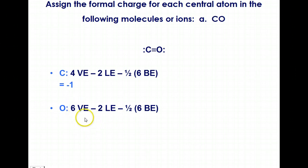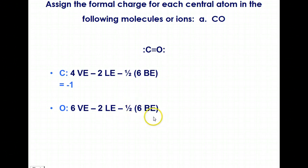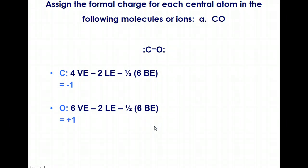Oxygen should be plus one so it cancels out the minus one for carbon. Oxygen has six valence electrons; two are lone electrons assigned to oxygen. Again, we have three bonds, so six bonding electrons being shared between oxygen and carbon. This gives us that plus one formal charge.